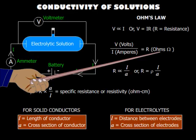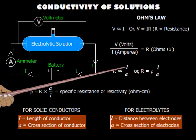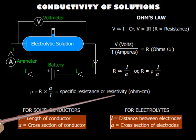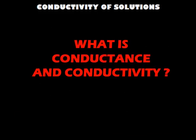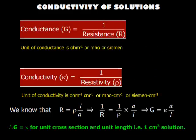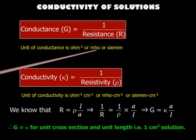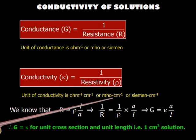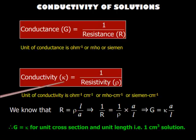Resistance of a solid conductor is proportional to the length of the conductor and inversely proportional to the cross-section of the conductor. The proportionality constant rho is called the specific resistance or resistivity. Unit of resistivity is ohm-centimeter. Conductance is the reverse of resistance and its unit is ohm-inverse, mho, or siemen. Conductivity is the reverse of resistivity, with unit ohm-inverse-centimeter-inverse or mho-centimeter-inverse or siemen-centimeter-inverse, denoted by kappa. Note that conductivity is nothing but the conductance of one centimeter cube of solution.